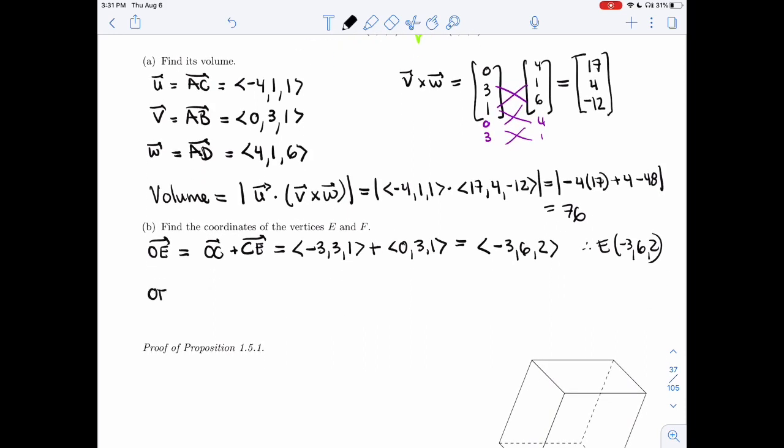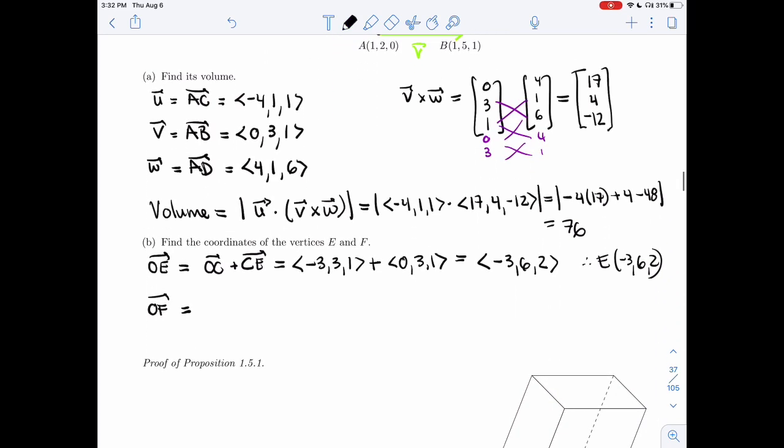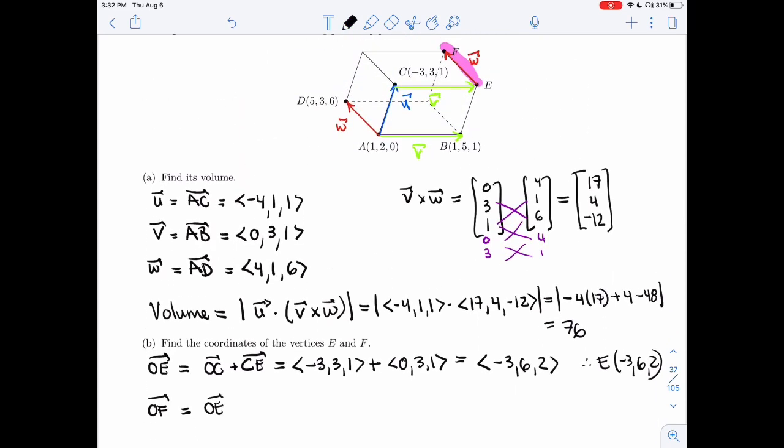Alright, OF. I should go through E because I know this vector. And now that I know E, that'd be enough. So I will have OE plus EF. OE we just found was minus 3, 6, 2. EF, that's red, so it's W which is 4, 1, 6. We found it in A right here. And so that's 1, 7, 8. So F is 1, 7, 8.